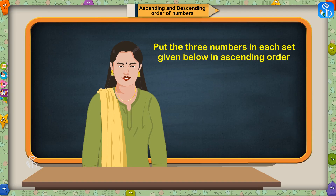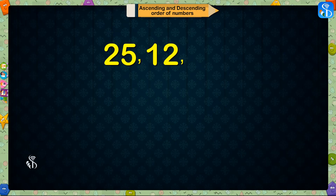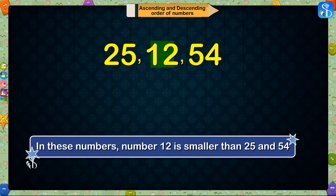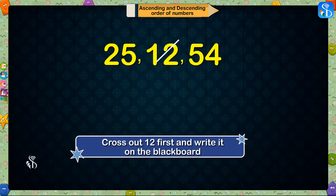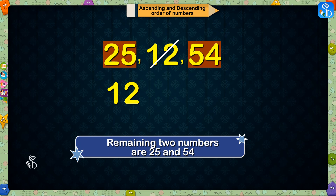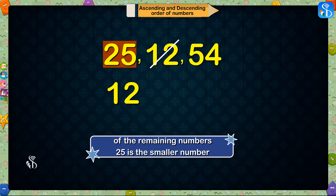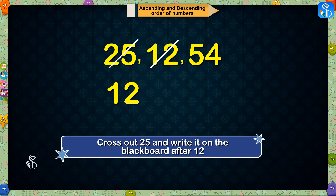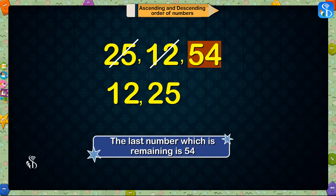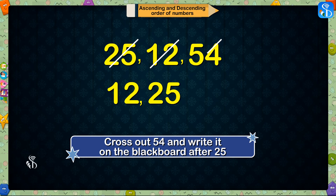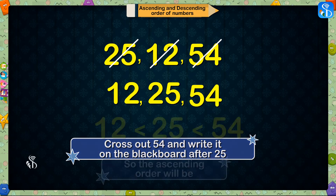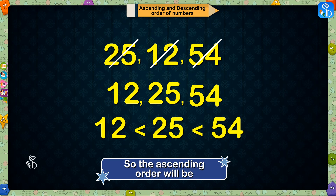Children, put the three numbers in each set given below in ascending order. First set: 25, 12, 54. In these numbers, 12 is smaller than 25 and 54. So, we will cross out 12 first and write it on the blackboard. The remaining two numbers are 25 and 54. From them, 25 is the smaller number. So, we will cross out 25 and write it on the blackboard after 12. The last number remaining is 54. So, we will cross out 54 and write it on the blackboard after 25. So, this is the ascending order of the given numbers.